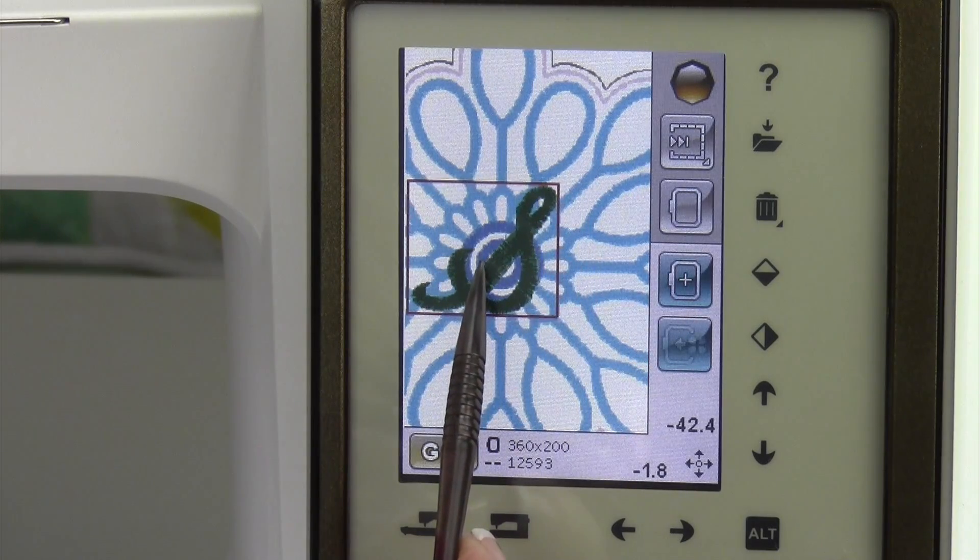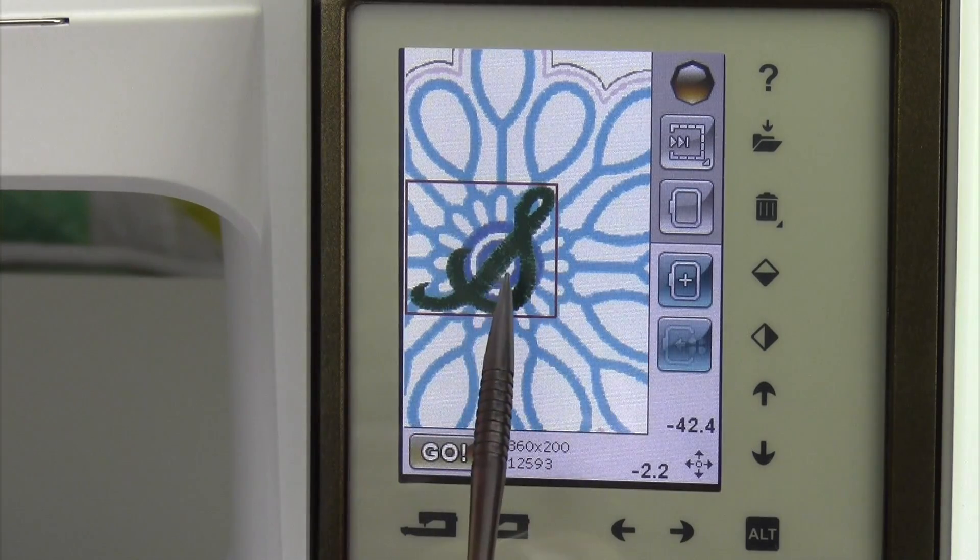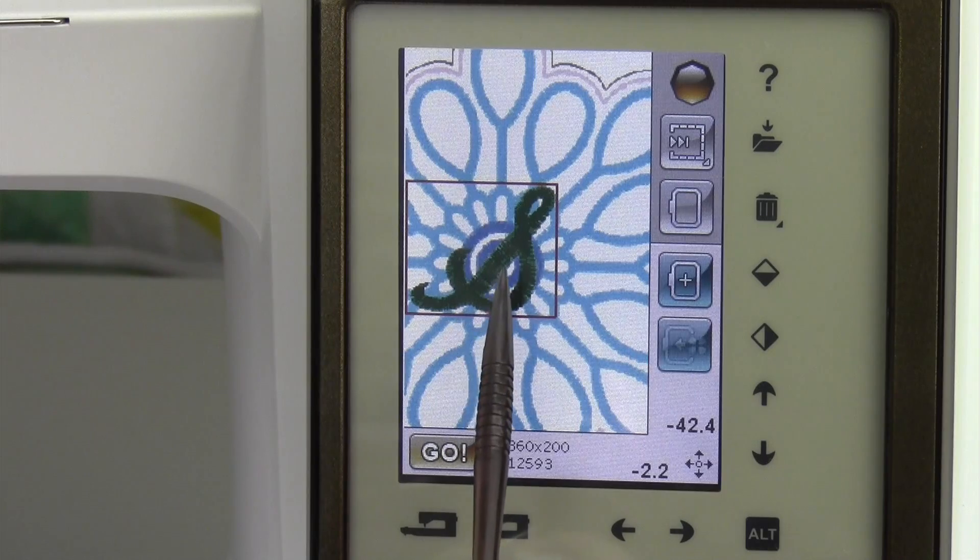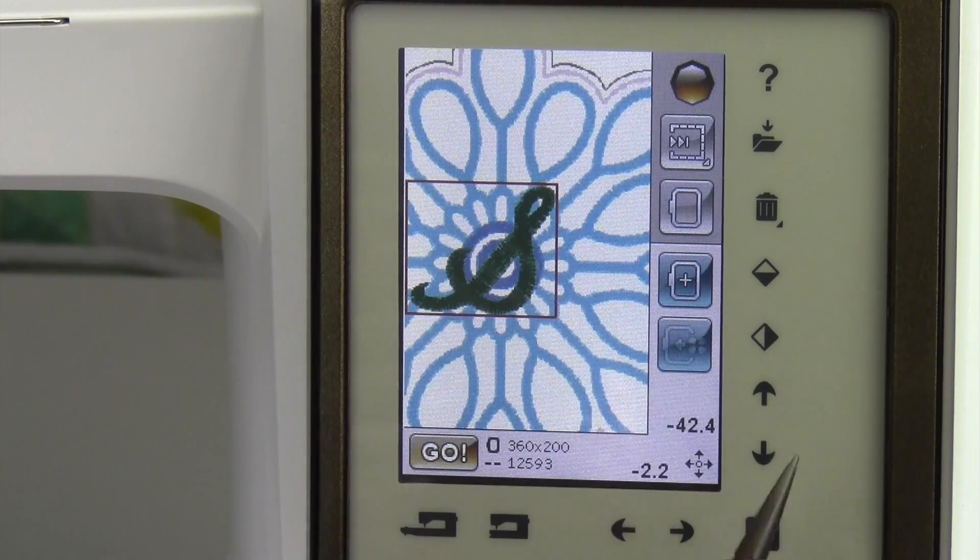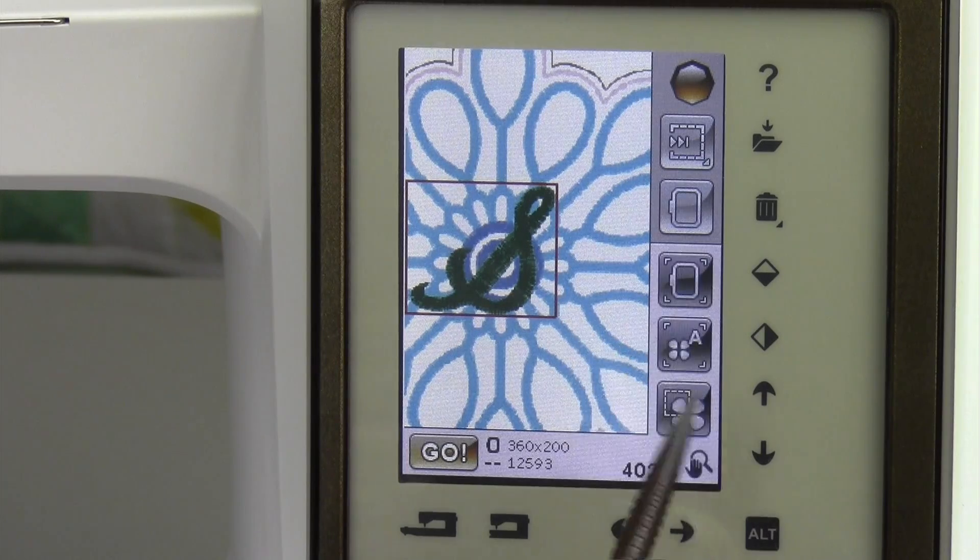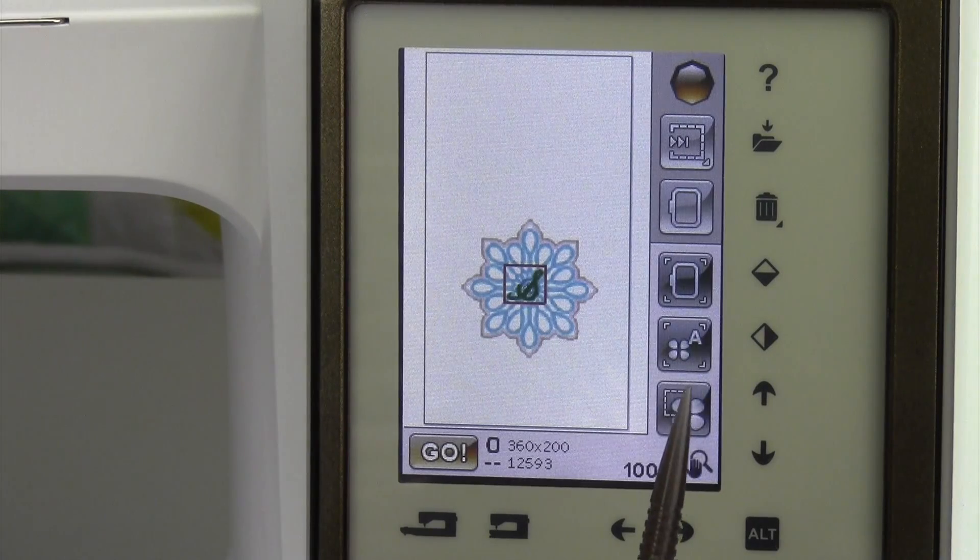Isn't that so much easier than trying to see it on the bigger screen? Since an S is kind of leaning, I'm going to put it a little bit offset so the majority of the letter does look like it's centered on and in that design. Let's go ahead and zoom back out, show the whole area.